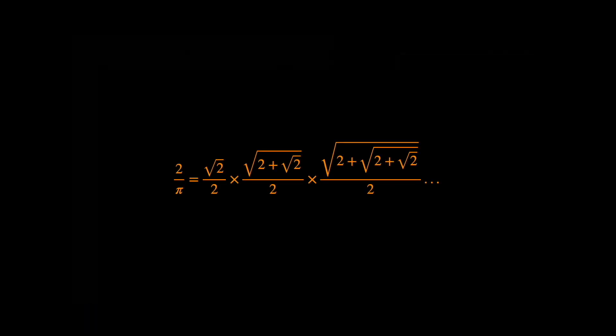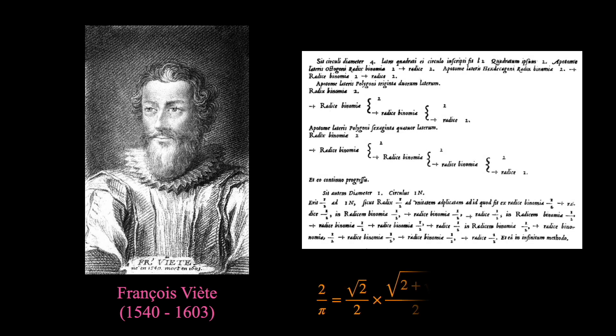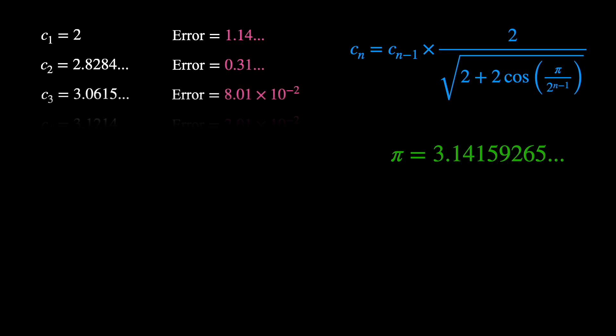This method was first officially documented in 1593, by a French mathematician François Viette, which is the expression shown in the step paper. He stated that the rearranged version of the expression can be used to compute pi if the process is repeated infinitely.